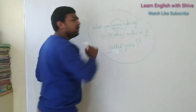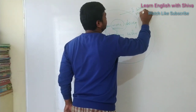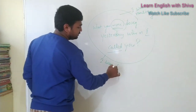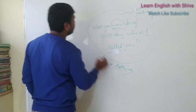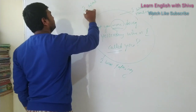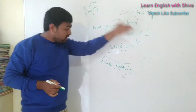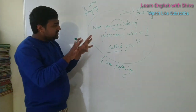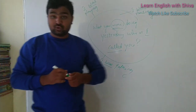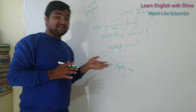Your answer might be like: I was reading, or I was talking, or I was playing. You can observe the answers — I was reading, I was talking, I was playing.